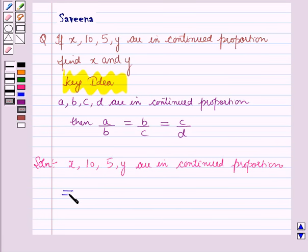Therefore, by using the key idea, if four terms are in continued proportion, then they can be written as x over 10 is equal to 10 over 5 is equal to 5 over y.